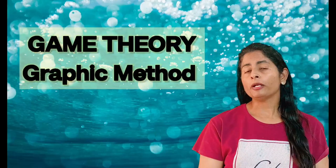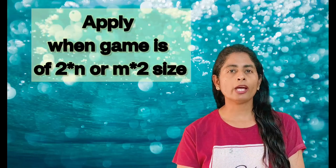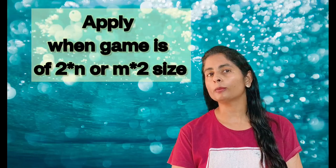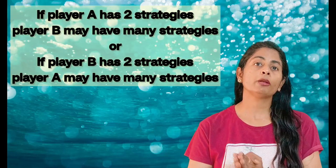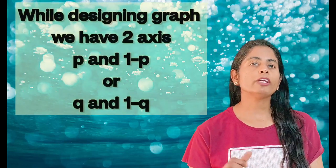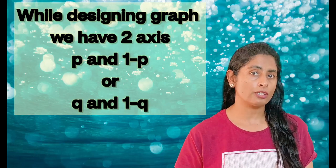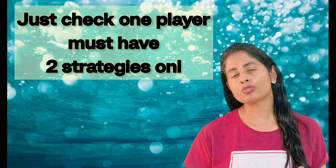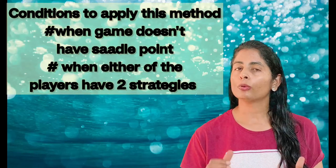An important method in game theory is the graphic method. This method is generally asked in examinations. You apply this method only when either player A or player B has two strategies only. If player A has two strategies, player B may have more than two — not an issue, and vice versa. Since a graph is two-dimensional, whenever one player has two strategies you can apply this method, i.e., for 2×n or m×2 problems.